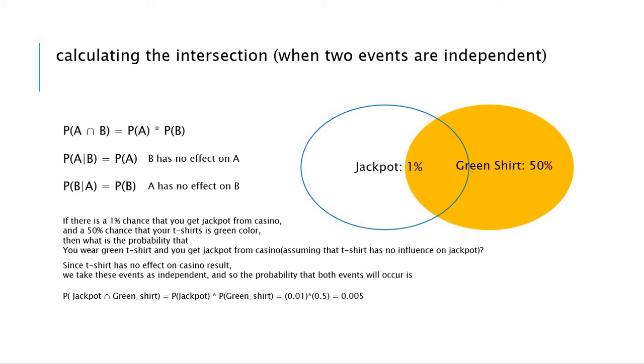So in this case, P of A and B we can denote as P of A multiplied by P of B. So in this case, the answer is going to be 0.01 multiplied by 0.5.